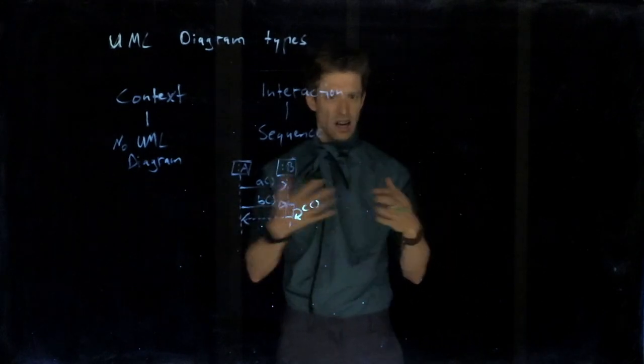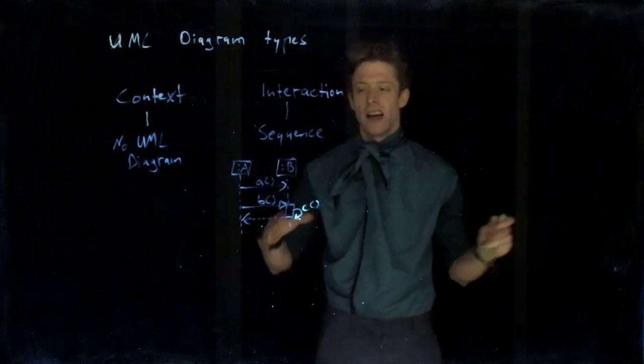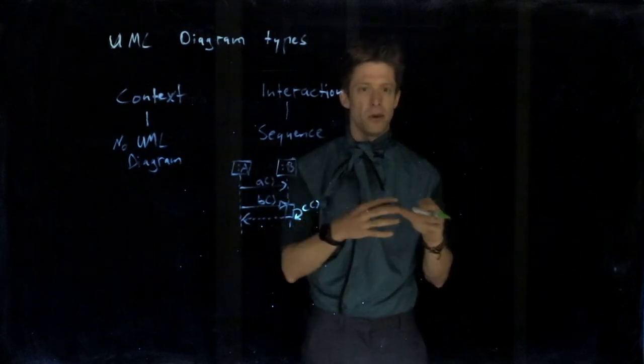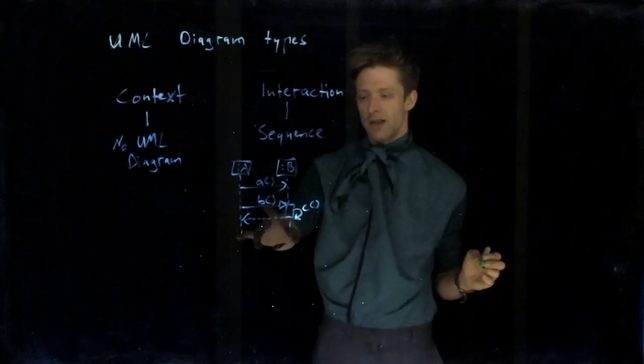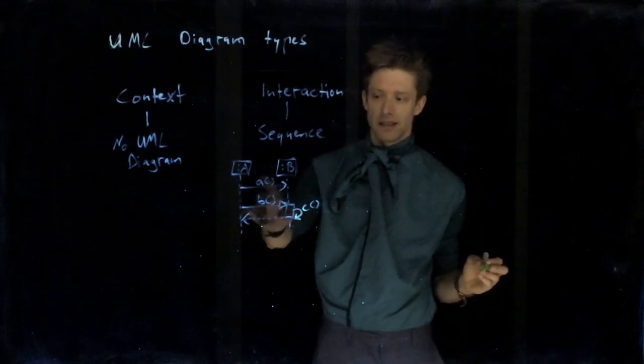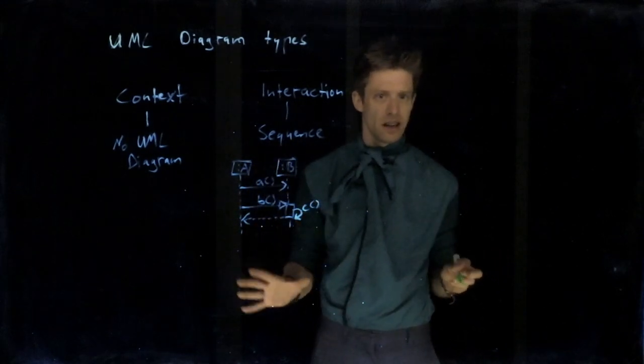For example, if you have two components, two systems developed by different companies, and you want to in detail describe how they should communicate, the protocol between them. Maybe you have to have A being sent before you send B.